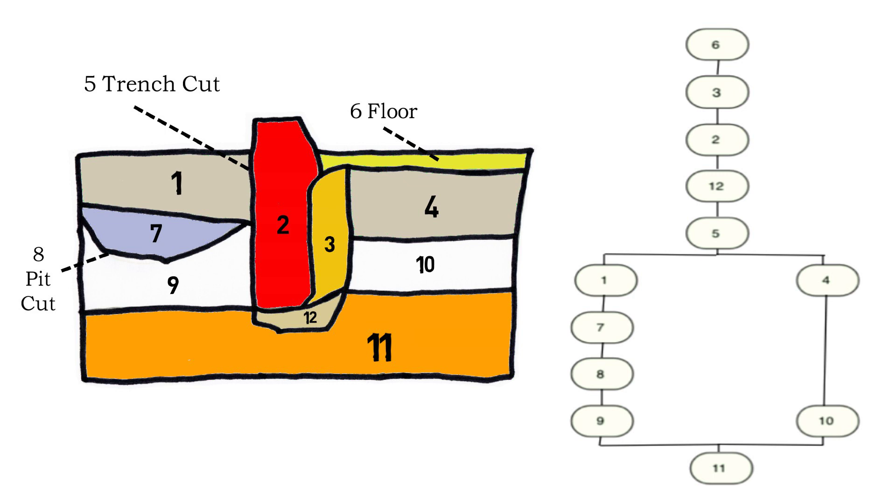This allows an interpretation of the site where the oldest natural layer is 11, which was deposited over by natural layers 9 and 10. These layers were recorded separately, but are of the same context, so were placed within the Harris Matrix at the same level.